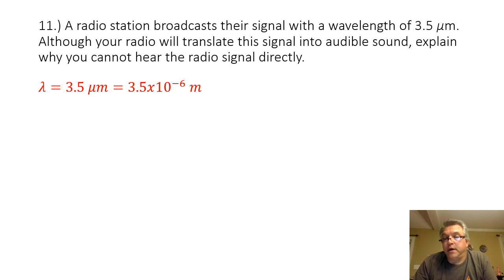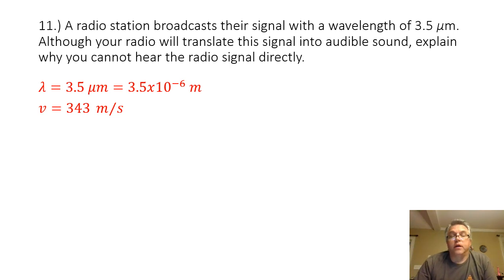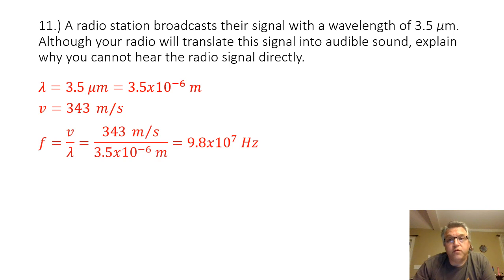I'm not specifying an air temperature here, so we're going to assume room temperature, which is 20 degrees Celsius. The speed of a sound wave at 20 degrees Celsius is 343 meters per second. I have the wavelength and the wave speed, so I can use the wave speed formula to find the frequency. Frequency equals wave speed divided by wavelength: 343 divided by 3.5 times 10 to the minus 6 gives a frequency of 9.8 times 10 to the seventh hertz.